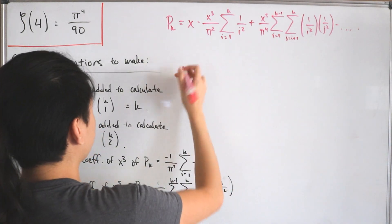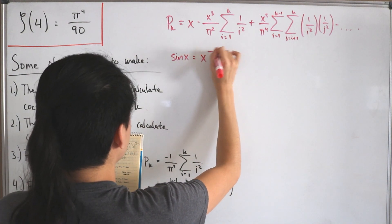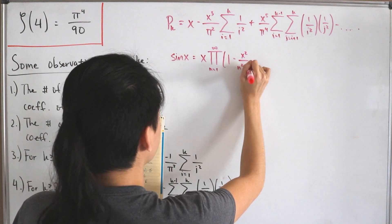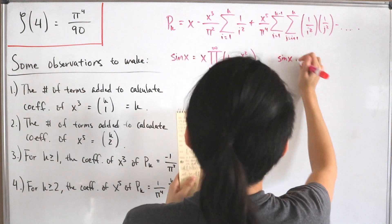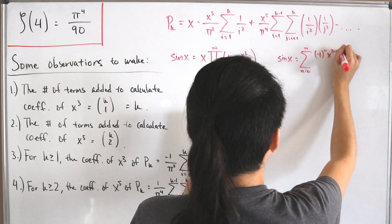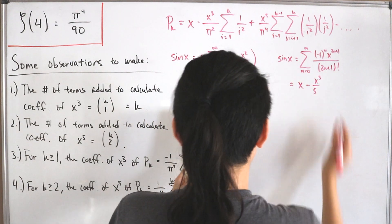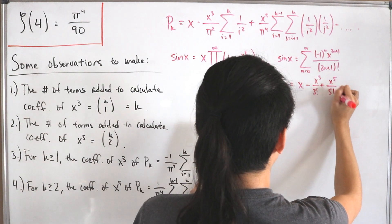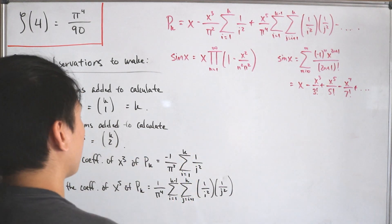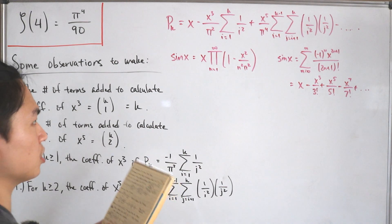We now use two representations of sine. First, Euler's infinite product: sin(x) = x · ∏_{n=1}^{∞} (1 − x²/(n²π²)). Second, the power series: sin(x) = ∑_{n=0}^{∞} (−1)ⁿ x^{2n+1}/(2n+1)! = x − x³/3! + x⁵/5! − x⁷/7! + .... Notice that as k → ∞, P_k approaches exactly Euler's infinite product for sin(x).